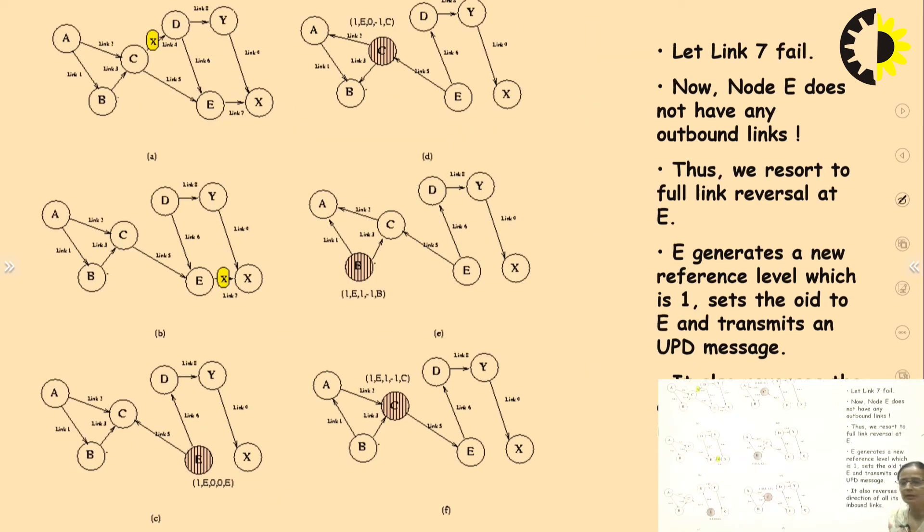Now let us suppose link 7 got failed. Now node E does not have any outbound link in this case. Thus we resort to a full link reversal at E. What E will do? Now E generates a new reference level which is 1.